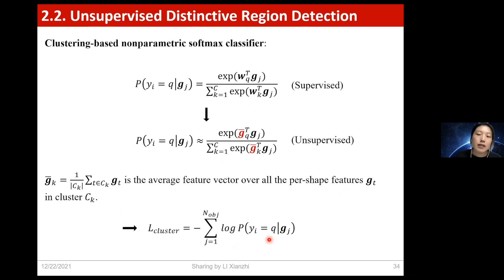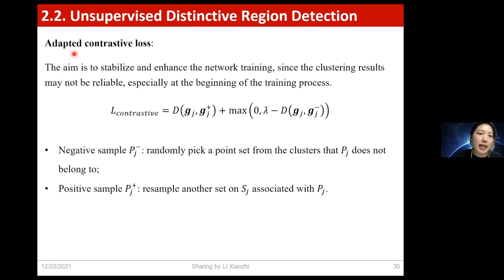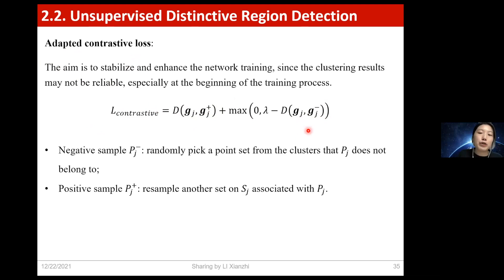However, some training samples may inevitably be wrongly clustered, so relying only on the clustering loss may not be sufficient. To stabilize and enhance the network training, we further formulate an adapted contrastive loss. Instead of feeding only one sample, we input a triplet consisting of an anchor, a positive sample, and a negative sample. The anchor and positive sample should be in the same cluster, while the anchor and negative sample should be in different clusters. We then use this equation to encourage the anchor and positive sample to be close to each other while pushing away the anchor and negative sample.